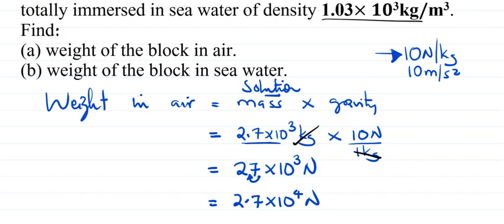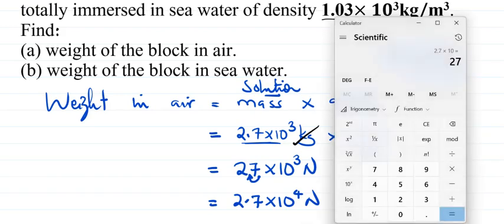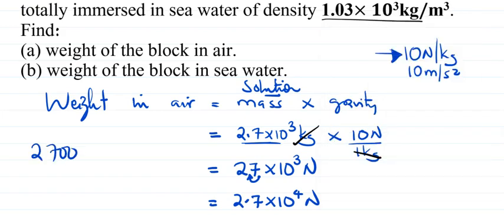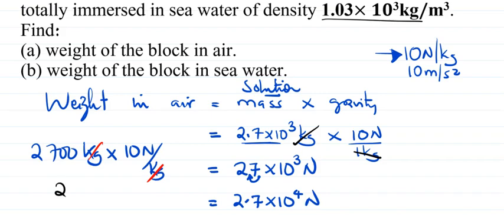So 2.7 times 10 to the power 3 equals 2,700. And our weight is 27,000 newtons, which in standard notation is 2.7 times 10 to the power 4. That is the weight of the block in air.